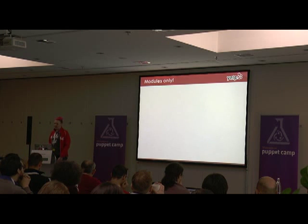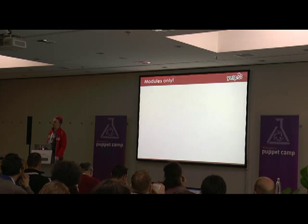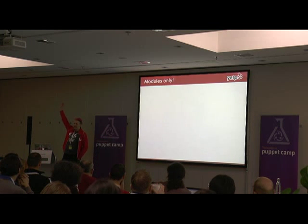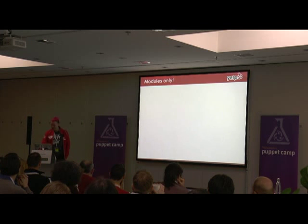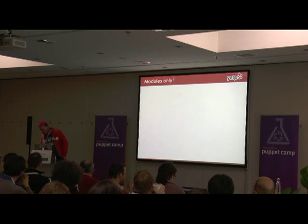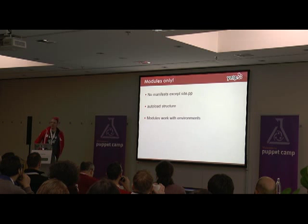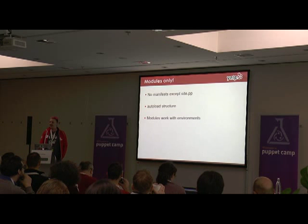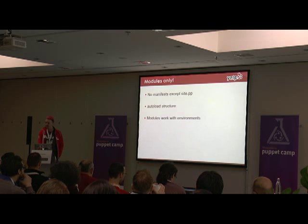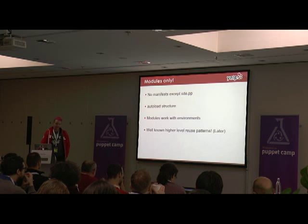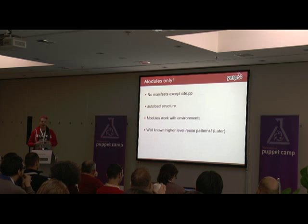The first thing to start with is modules only. Who has bunches of Puppet code in their work code base that is not in modules? There are a bunch of advantages to using modules. The key one for me is that modules work with environments — you can push different environments out to your Puppet master for testing code, and that is really handy. Until you have code that is not in modules, at which point you make a change, push it out to an environment, try and run it, and nothing happens, and you spend half an hour being really confused. The other thing about modules is that there are higher-level reuse patterns for how you combine modules sensibly together, which we will come back to.